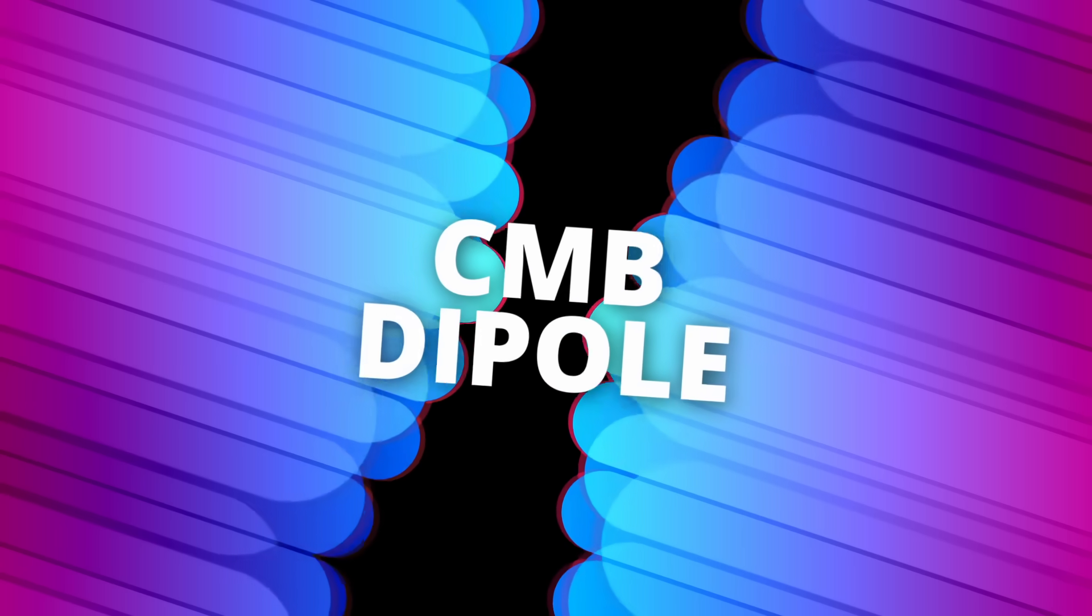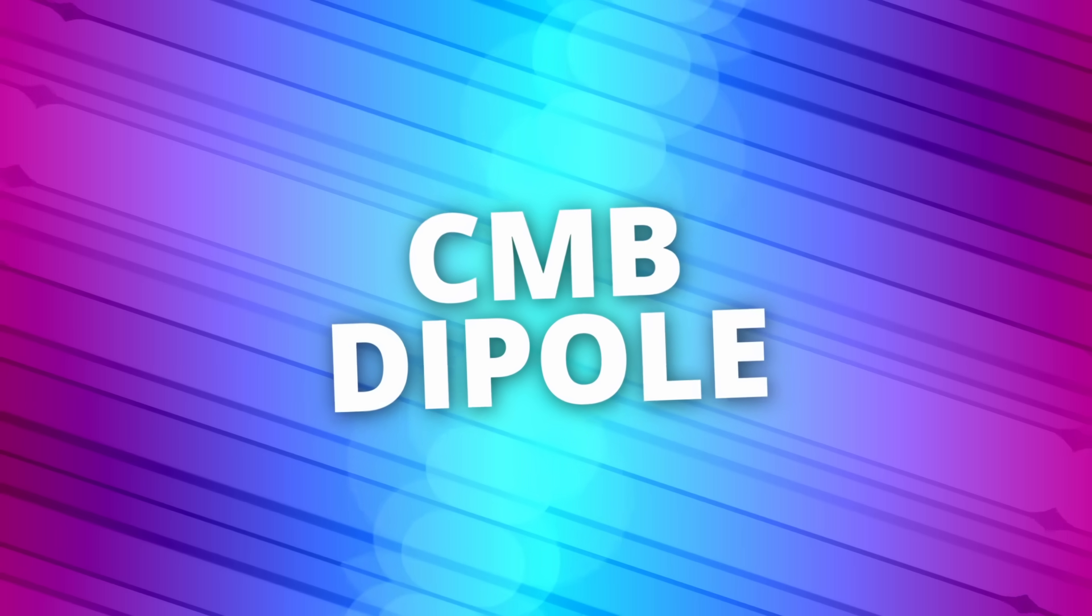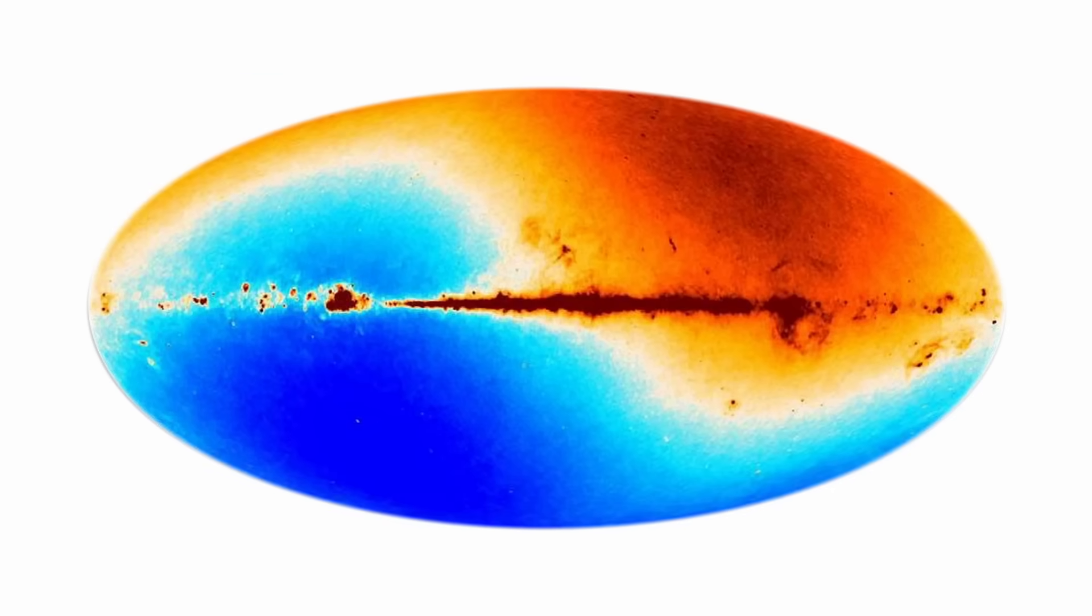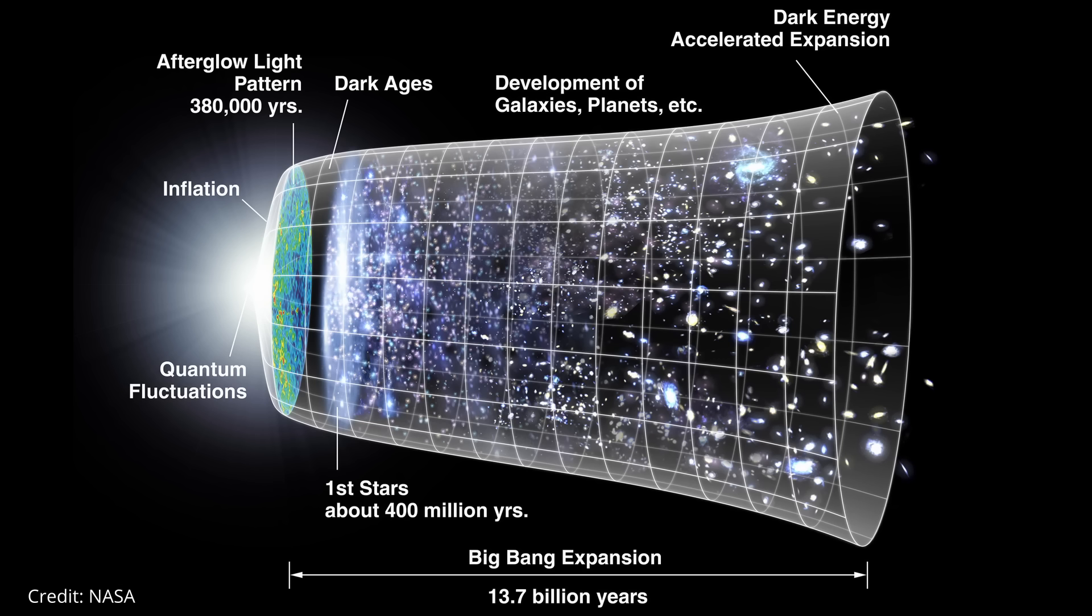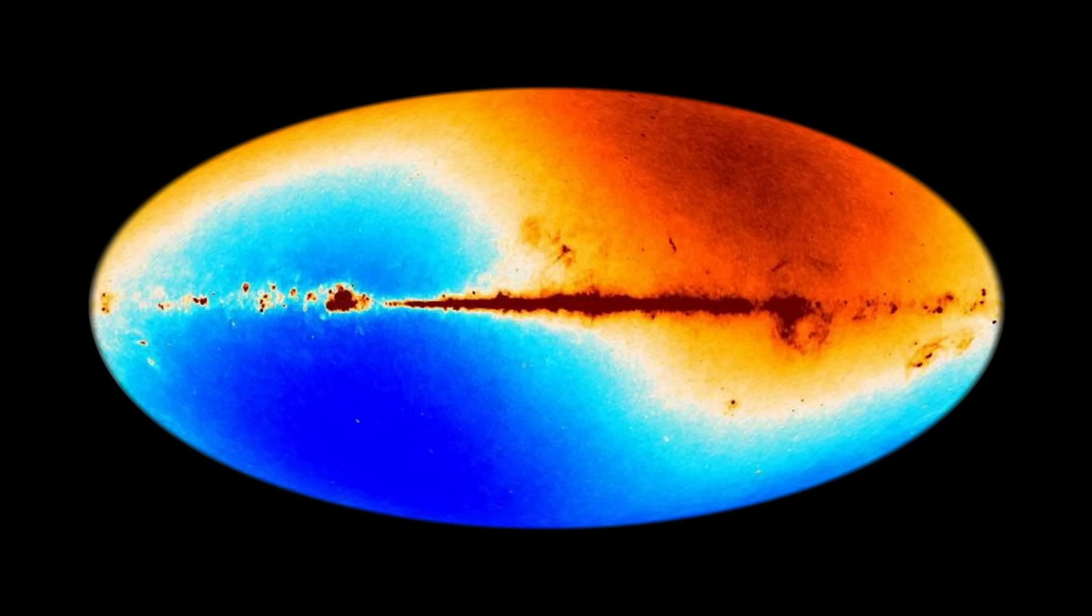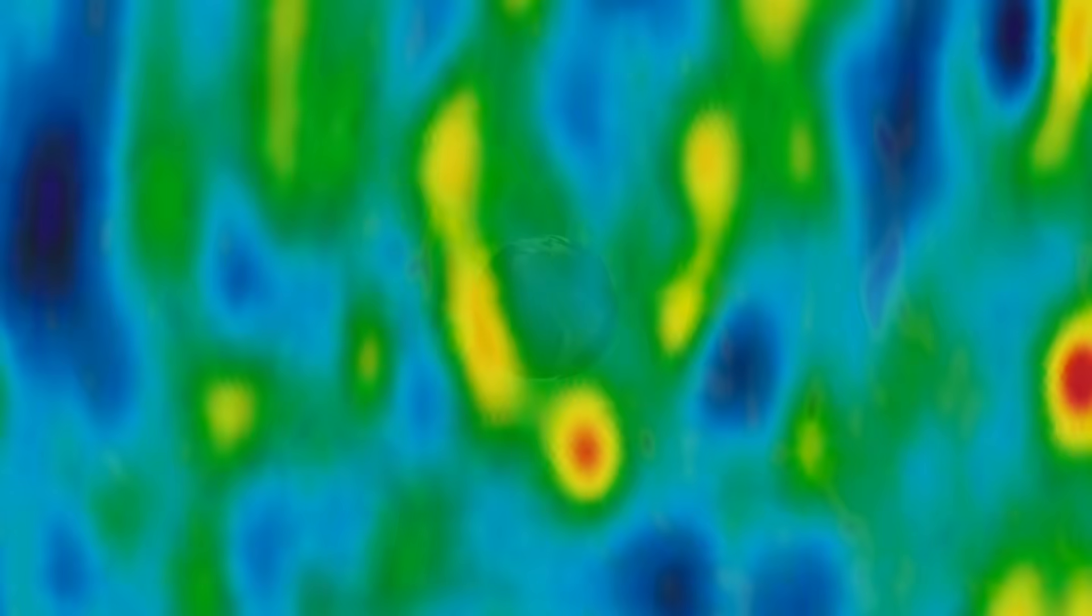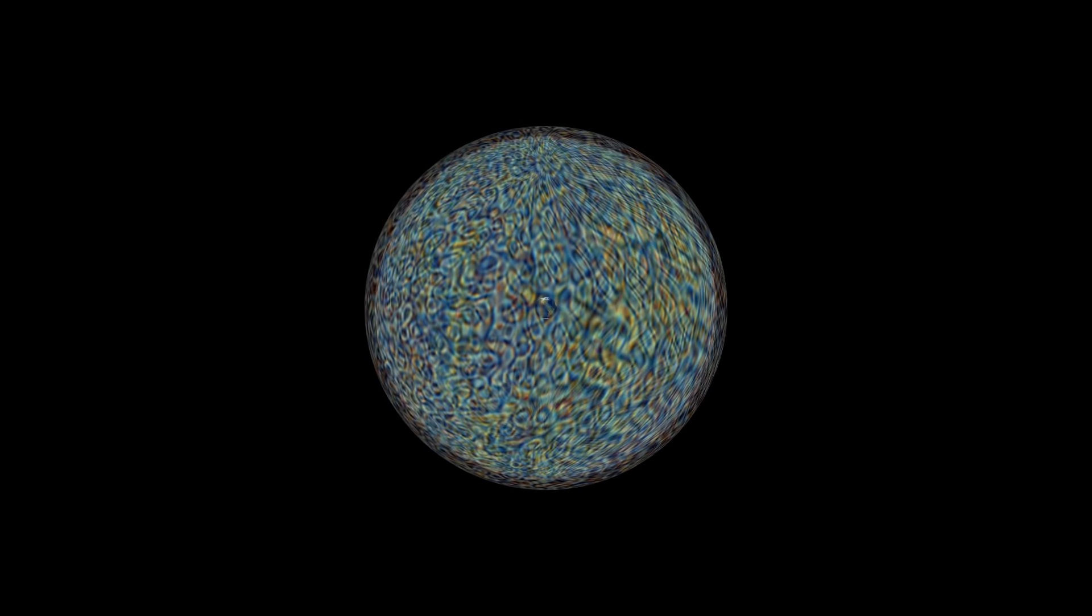To understand why this creates such a big problem for Lambda CDM, we need to be clear about what the CMB dipole is supposed to represent inside the standard model. The idea begins with the CMB itself. In Lambda CDM, this ancient light isn't just a relic, it acts as a universal backdrop, a kind of cosmic reference field. The tiny temperature difference we see across the sky, the dipole, is assumed to come entirely from our motion through the field.